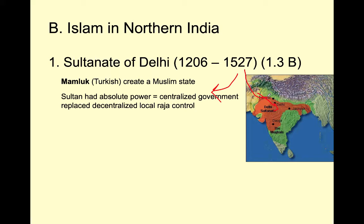In theory you have an emperor, but for the most part, local power stays with the local rajahs — local kings or princes. The Sultanate of Delhi is trying to change all that, based on models they've seen in the rest of the Islamic world with an all-powerful central ruler. We've talked about a Khalif or a Sultan before, and we're going to see them bring that idea of a centralized state with a sultan into India.